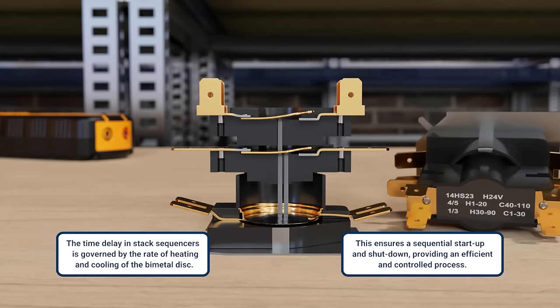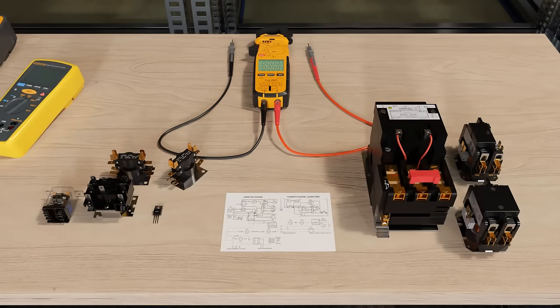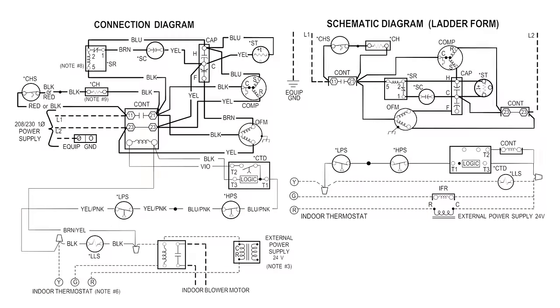In summary, a sequencer is using heat rather than an electromagnetic field to control the switching. Let's further drive home the way these various controls work by showing them on a diagram and test it with a multimeter.